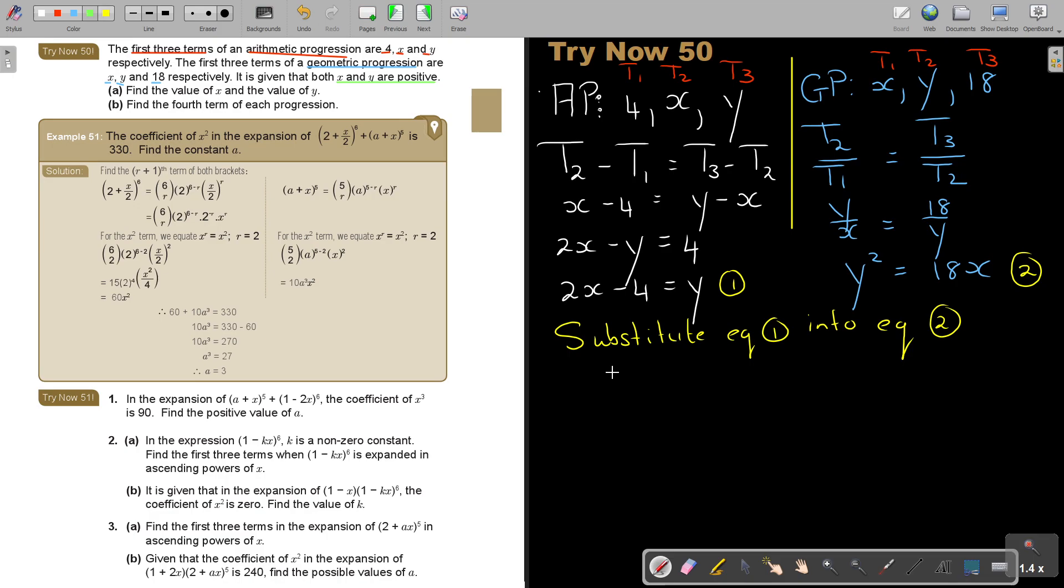So if I substitute, I'm just going to say now, in the place of y squared, so there's y. Can you see why I did y? So it's 2x minus 4 squared, and that is 18x.